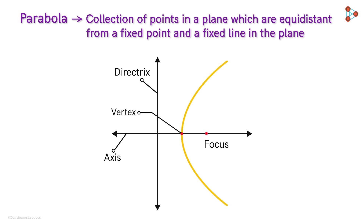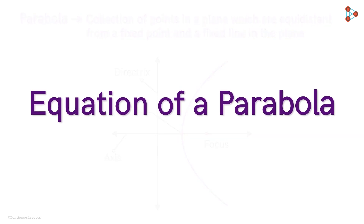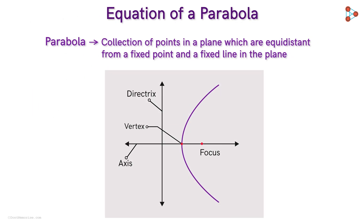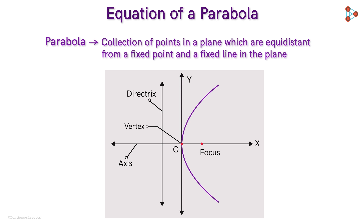Take a moment to look at this parabola. In this video, let us find the equation of a parabola. For this, we will have to draw the x-axis and the y-axis. For simplicity, let us take the x-axis along the axis of symmetry of the parabola and the origin O at its vertex. Then we will get the y-axis to be this. Let us name the focus point as F and the directrix as L. Also, let us say the distance between the vertex O and the focus F is A, where A is a positive constant.